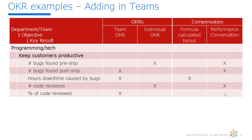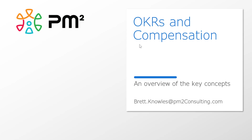Many times our clients start off with teams and reluctantly move into individuals later. Sometimes people already have individual OKRs and are trying to move them all to teams or come up with a mix. So that's it in summary: three bands, use SMART, set up the key results to work with your compensation formulas and conversations. Hopefully that answers your questions — look forward to talking more about these later. Bye for now.